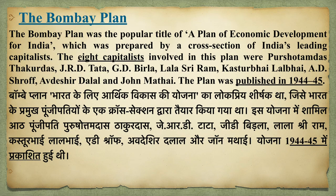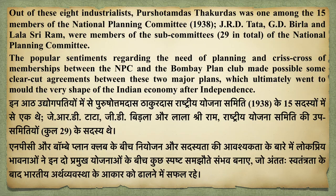The third important plan is the Bombay plan — a plan for economic development for India made by 8 capitalists. The eight names are: Purshottam Das Thakurdas, JRD Tata, GD Birla, Lala Shri Ram, Kasturbhai Lalbhai, AD Shroff, Ardeshir Dalal, and John Mathai. This Bombay plan was published in 1944-45. Out of these 8 industrialists, Purshottam Das Thakurdas were members of the National Planning Committee in 1938, and JRD Tata, GD Birla, and Lala Shri Ram also made subcommittees — 29 total subcommittees — as members of the National Planning Committee.